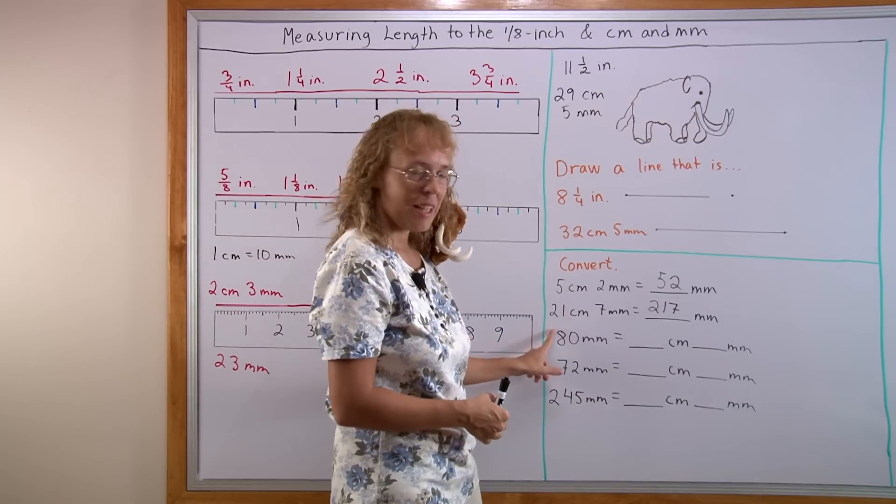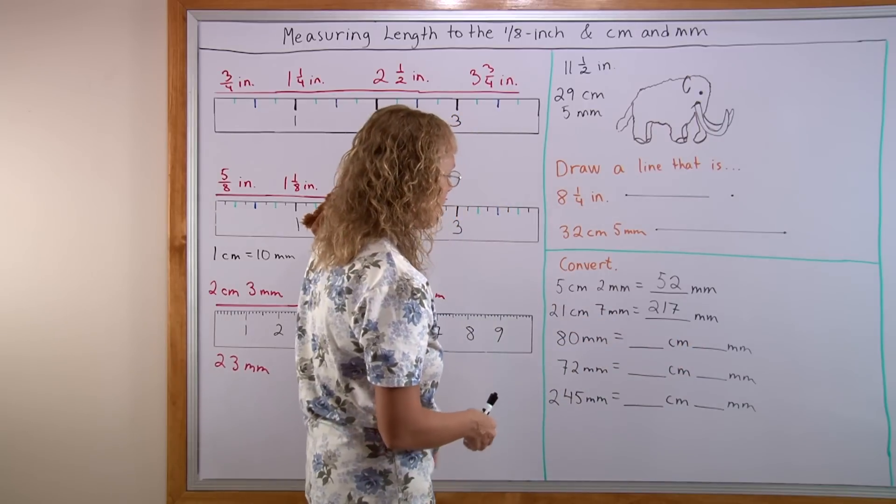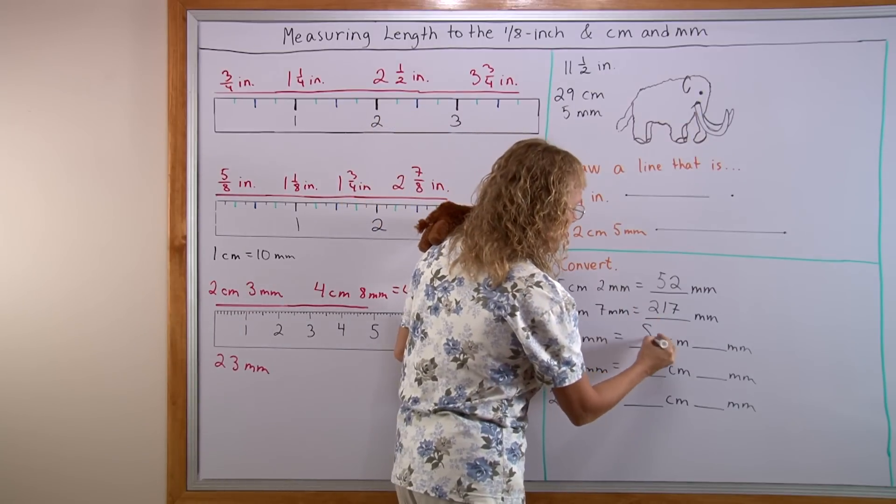But now the other way. 80 millimeters. How many centimeters is it? And maybe millimeters left over. This is easy because each 10 millimeters makes a centimeter. So we have here 8 centimeters.